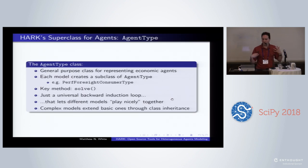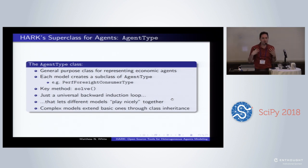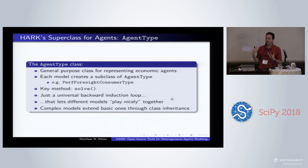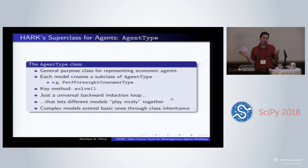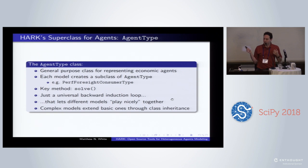Just to give you a sense in these last few minutes of how this all works: on the micro side, our super class at the top is AgentType. This is our framework for representing all kinds of agents and decision makers — in this case, the most basic one: a perfect-foresight agent making a decision about how much to consume and how much to save, facing no risk other than potential death. The key method of AgentType is the solve method, which is nothing more than a universal backward induction loop.